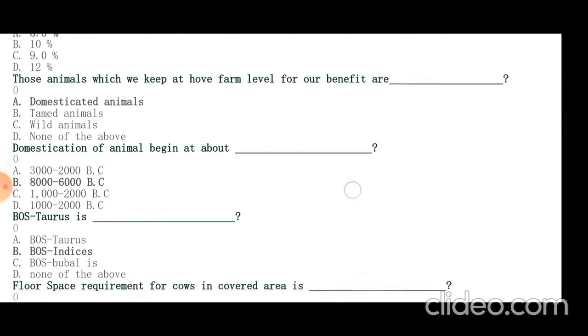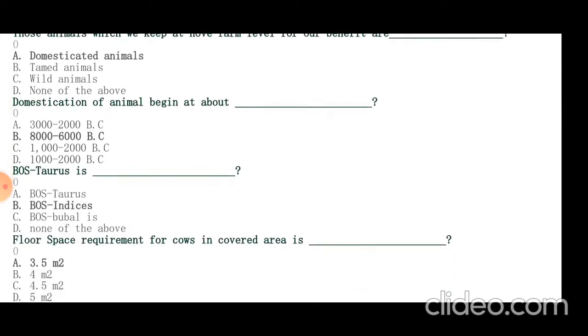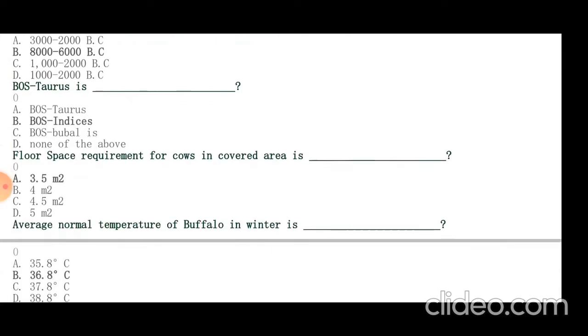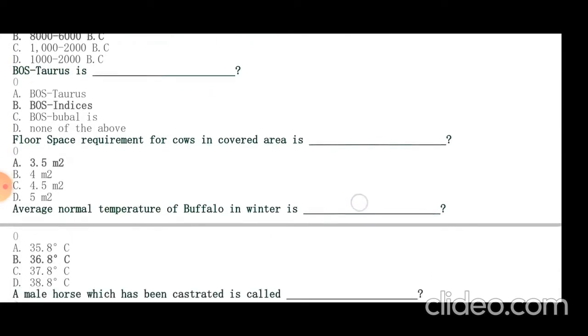Floor space requirement for cows in covered area is 3.5 meters square. 4 meters square is for buffalo. Average normal temperature of buffalo in winter is 36.8 degrees centigrade.